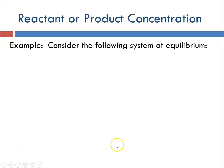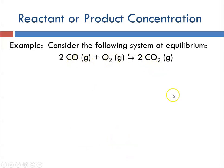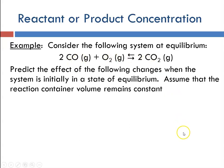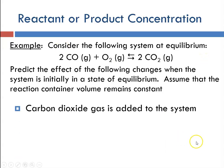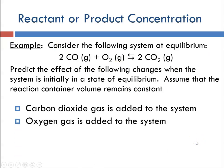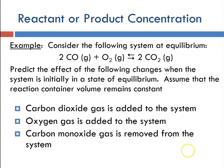Here's an example. Consider the following system at equilibrium: carbon monoxide plus oxygen to produce carbon dioxide. Predict the effect of the following changes when the system is initially in a state of equilibrium, and assume that the reaction container volume is constant. What happens if carbon dioxide is added to the system? If oxygen is added to the system? If carbon monoxide gas is removed?